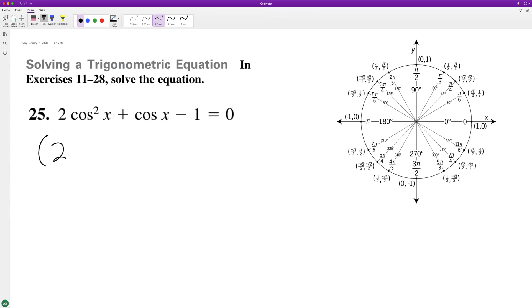for x. So we'll split this up into two cosine x minus one, and this will be cosine x plus one.